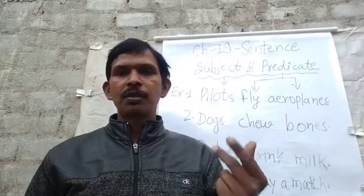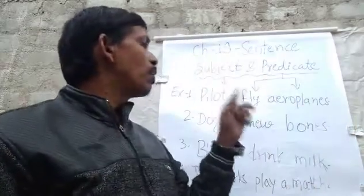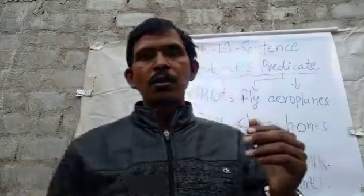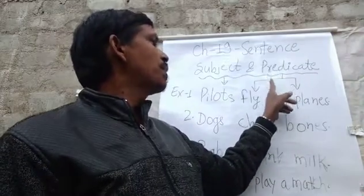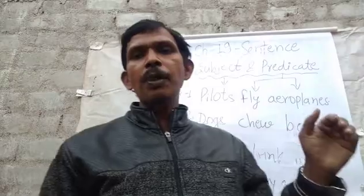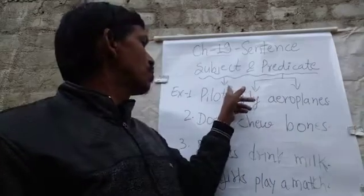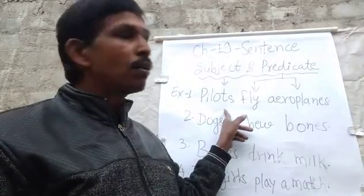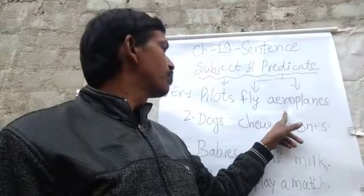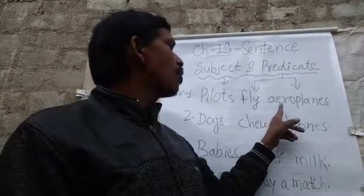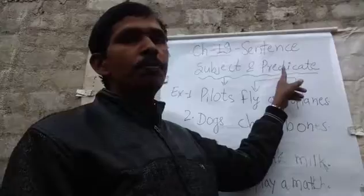Subject, verb, object — and when verb and object come together, they make the predicate. The predicate contains the verb and the object. The subject comes first in the sentence, then the verb, then the object. Verb and object together make the predicate.